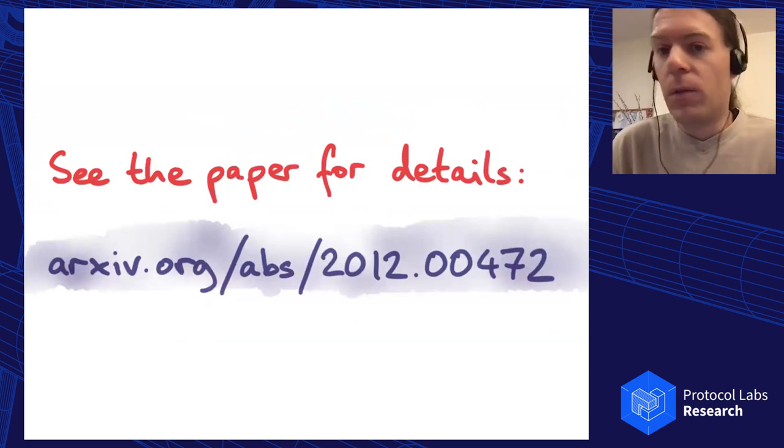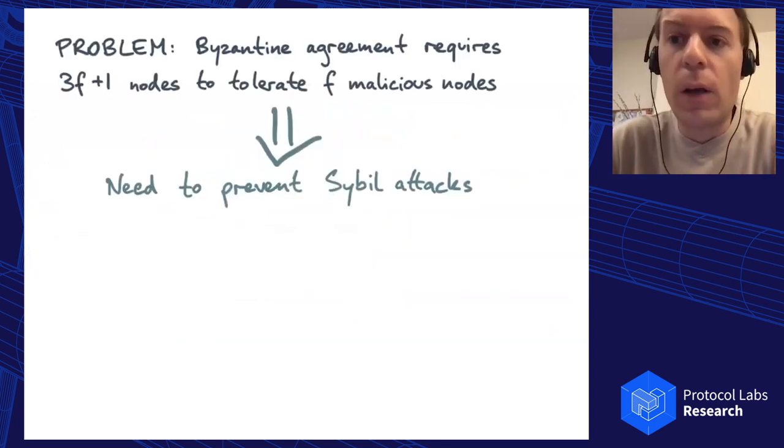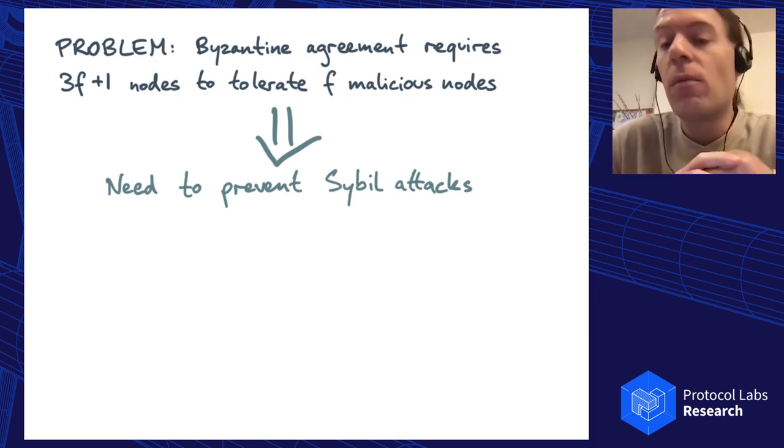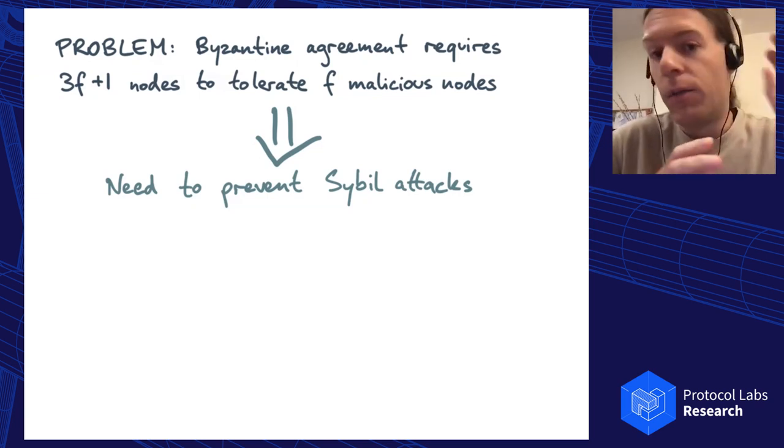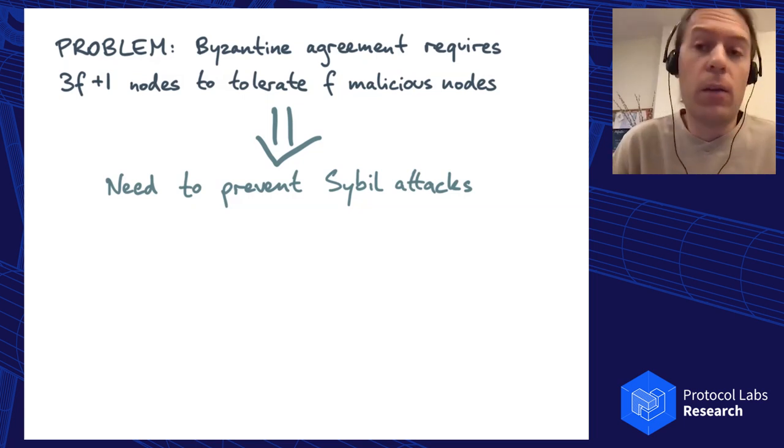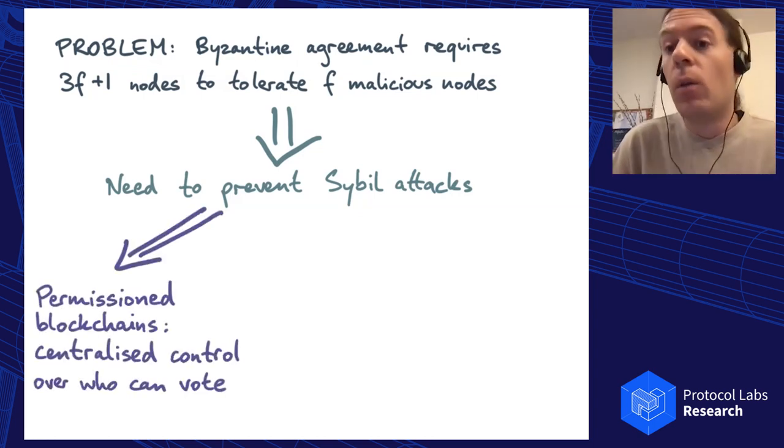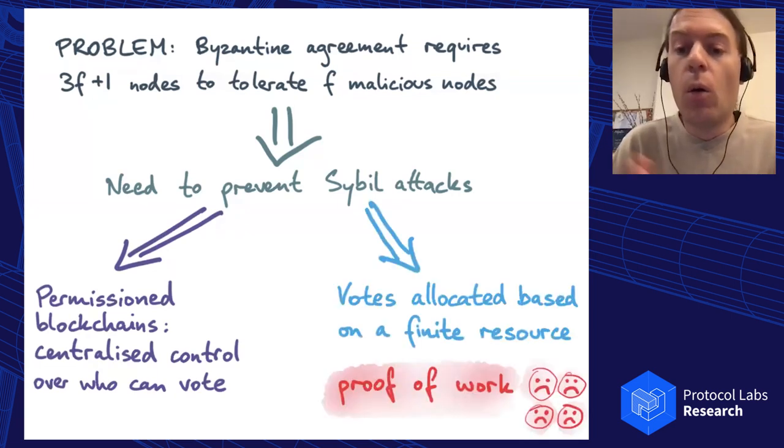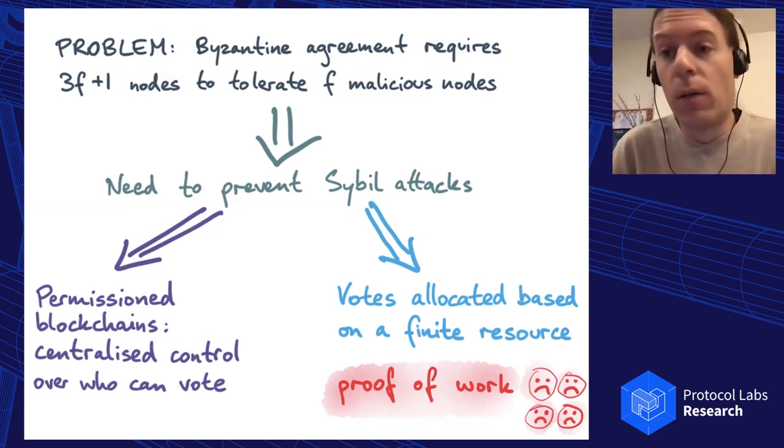The problem that I want to talk about today is the assumption of how many nodes are going to be malicious in a Byzantine fault-tolerant system. Generally for Byzantine agreement, the model is you have up to F malicious nodes and you need 3F plus 1 nodes in total to tolerate those F malicious nodes, which means you need some measure to prevent Sybil attacks to avoid that limit of F nodes being exceeded. Either you can have the permissioned blockchain approach with centralized control, or you can use some finite resource like proof of work to avoid Sybil attacks.